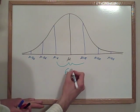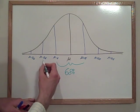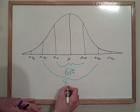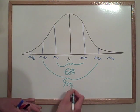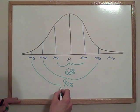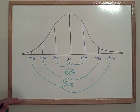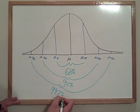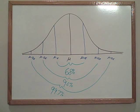95% of the population is within two standard deviations, and the vast, vast majority, 99.7% of the population, is within three standard deviations.